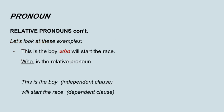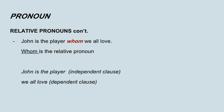Let's look at these examples. This is the boy who will start the race. In this sentence, who is the relative pronoun. This is the boy is the independent clause of the sentence, and will start the race is the dependent clause. Another example is: John is the player whom we all love. Whom is the relative pronoun. John is the player is the independent clause of the sentence, and we all love is the dependent clause.